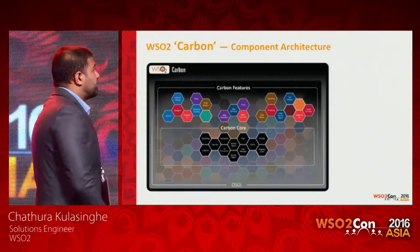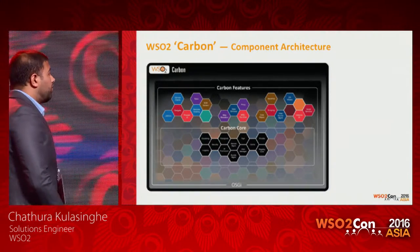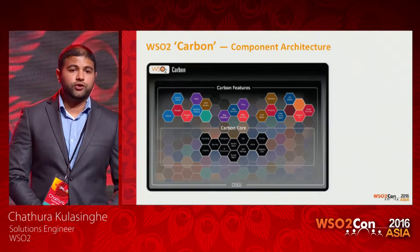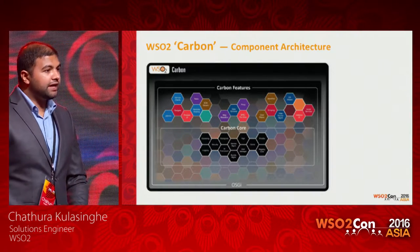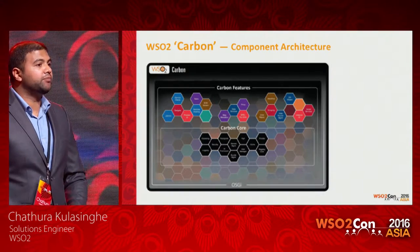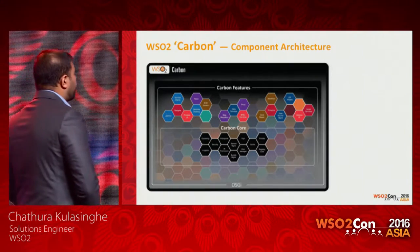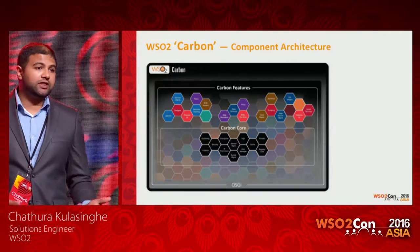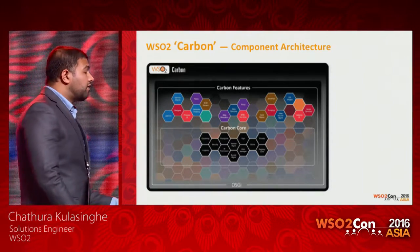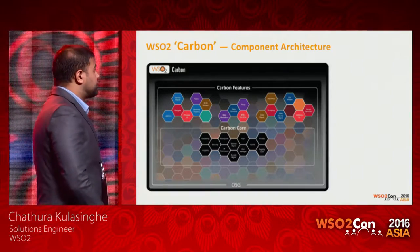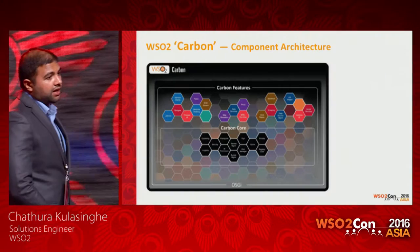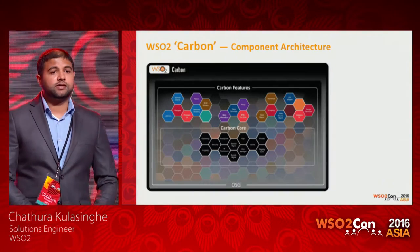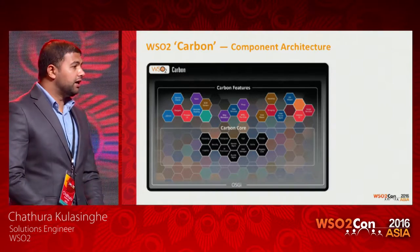The basic thinking behind the WSO2 Carbon platform architecture is exactly similar to this. When we designed the Carbon platform, we first imagined all the requirements you would have for your middleware solutions without thinking about product boundaries. Based on that, we developed many features to represent each and every functionality required, and we maintain a feature repository where these features are stored as modules, which can be used to construct any solution or product.